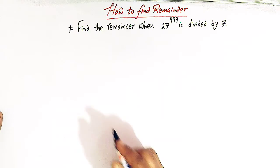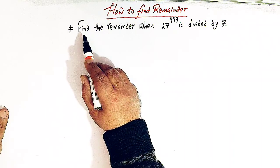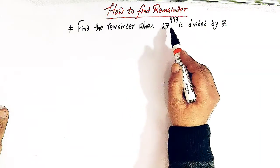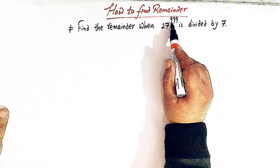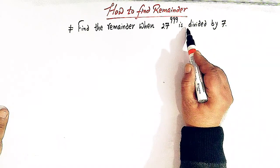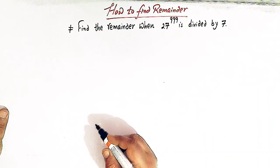Now, let us consider one more problem. Here we have to find the remainder when 27 raised to 999 is divided by 7.